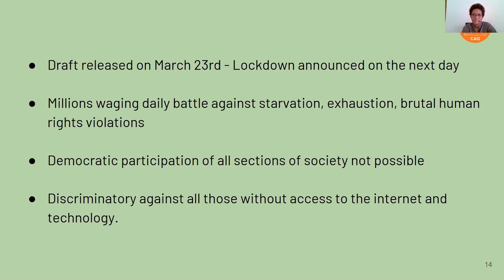There has been no access for many people to go to a government office and access a draft. We are still looking at a very small population that has internet access and understands what the new law proposes. Very importantly, the government itself does not take the role of explaining what the new law means to people — it is usually civil society organizations that cobble up their resources to do outreach. For frontline activists this has been an especially troublesome time, with energies divided on issues like migrant workers and making basic resources available to people.